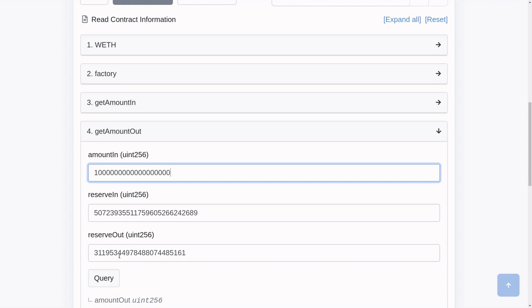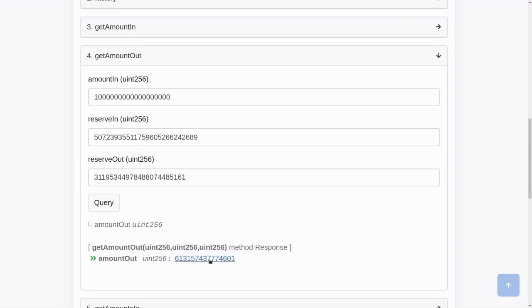ReserveIn is equal to X. ReserveOut is equal to Y. And I'll hit Query. And that is the amount DY that Uniswap gives us back.